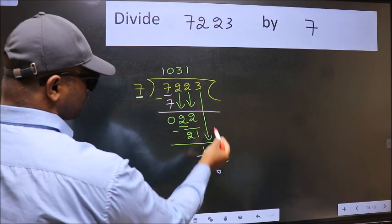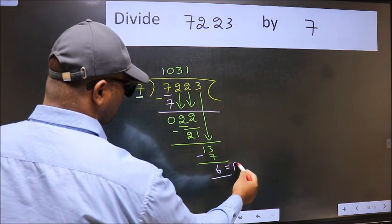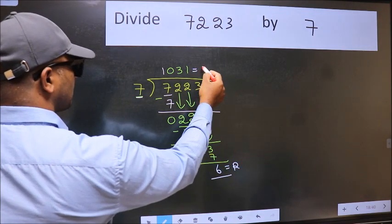No more numbers to bring it down, so we stop here. This is our remainder and this is our quotient.